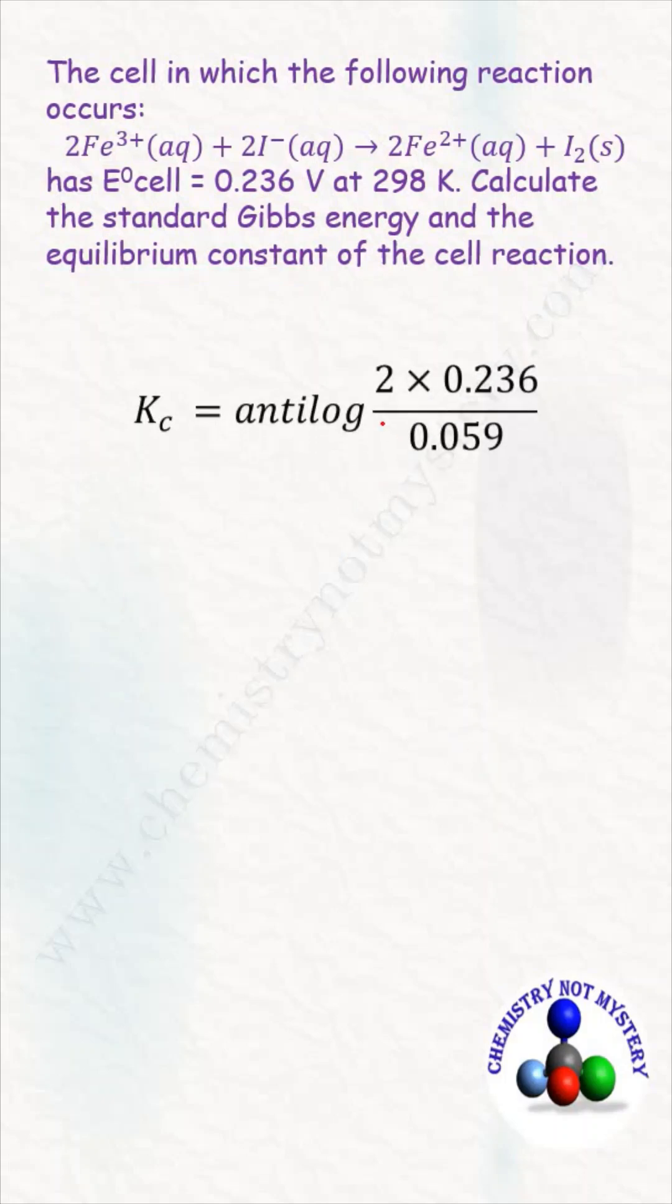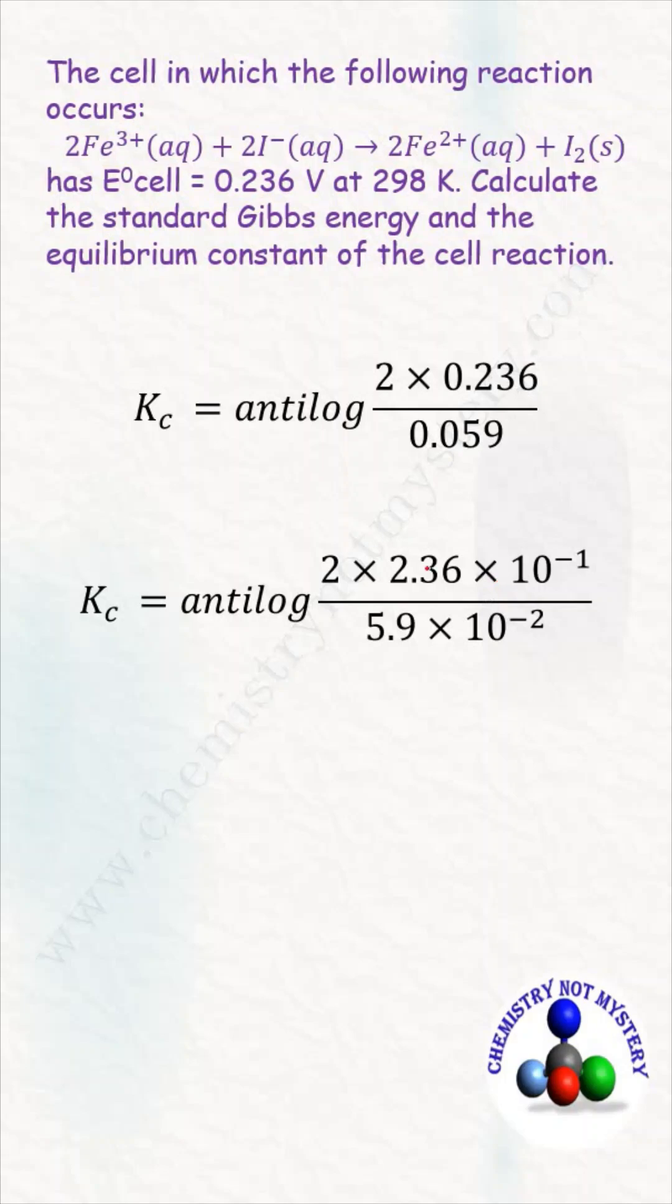Now solve this equation. To solve this equation, convert these values in scientific notation. When you divide 5.9 by 2.36 you will get approximately 2.5, and when you calculate the powers of 10, you will get 10^(-1-(-2)).